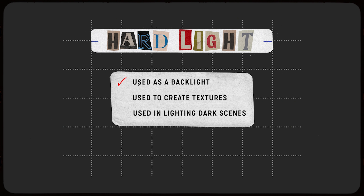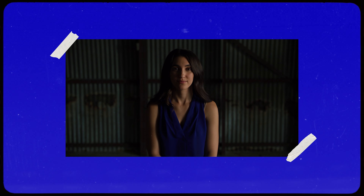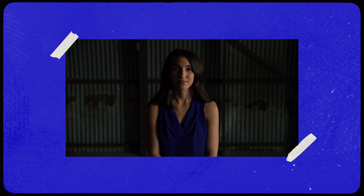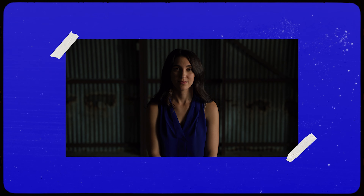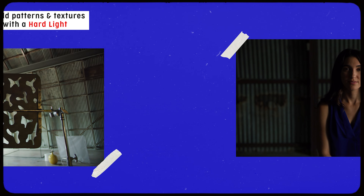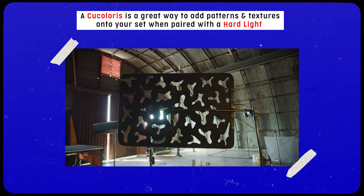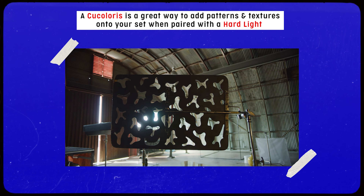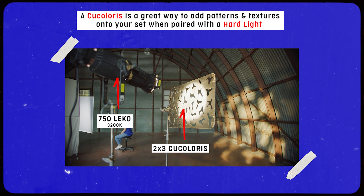Another time you can use hard light to your advantage is to create patterns and textures in your set. Say you're framed up on your subject and behind them there's a pretty boring, uninteresting wall with no set dressing, nothing going on. What you can do is make that interesting with hard light. Instead of just shining a bright light at it, try putting the light outside and sending it through some blinds, maybe sending it through a tree branch.